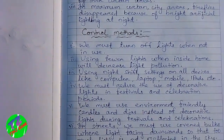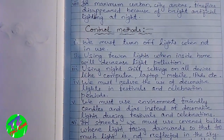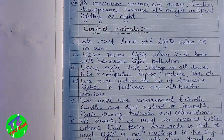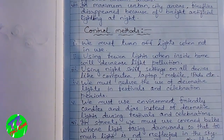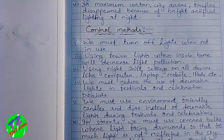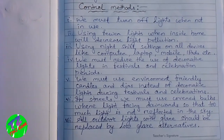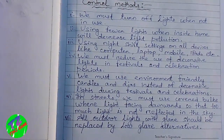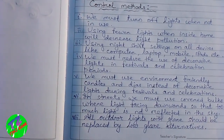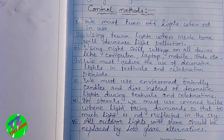Now let us look at the control methods of light pollution. First, we must turn off lights when not in use. Using fewer lights inside the home will decrease light pollution. Using the night shift setting on all devices like computers, laptops, mobiles, etc. also decreases light pollution. We must reduce the use of decorative lights during festivals, and instead use environment-friendly candles and diyas. In streets, we must use covered bulbs where light faces downwards so that too much light is not reflected into the sky, minimizing sky glow. All outdoor lights with glare should be replaced by low-glare alternatives.